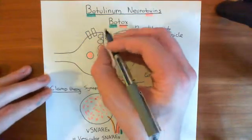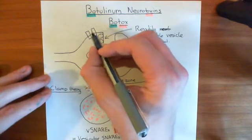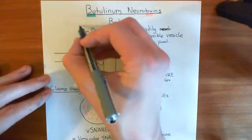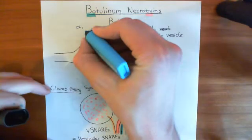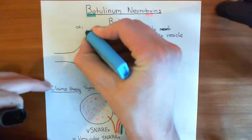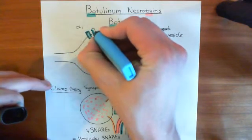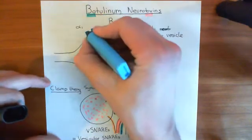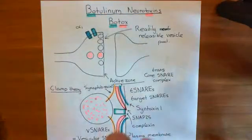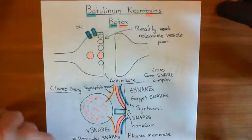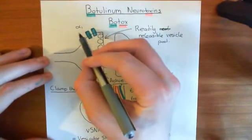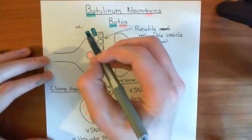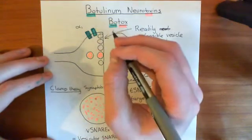Voltage-gated calcium channels are made up of a main subunit known as the alpha-1 subunit. The alpha-1 subunit is the main subunit because it's the subunit that actually has the pore which allows calcium to move through it. Now there are many different genes which code for alpha-1 subunits. I think there are in fact 10 genes.